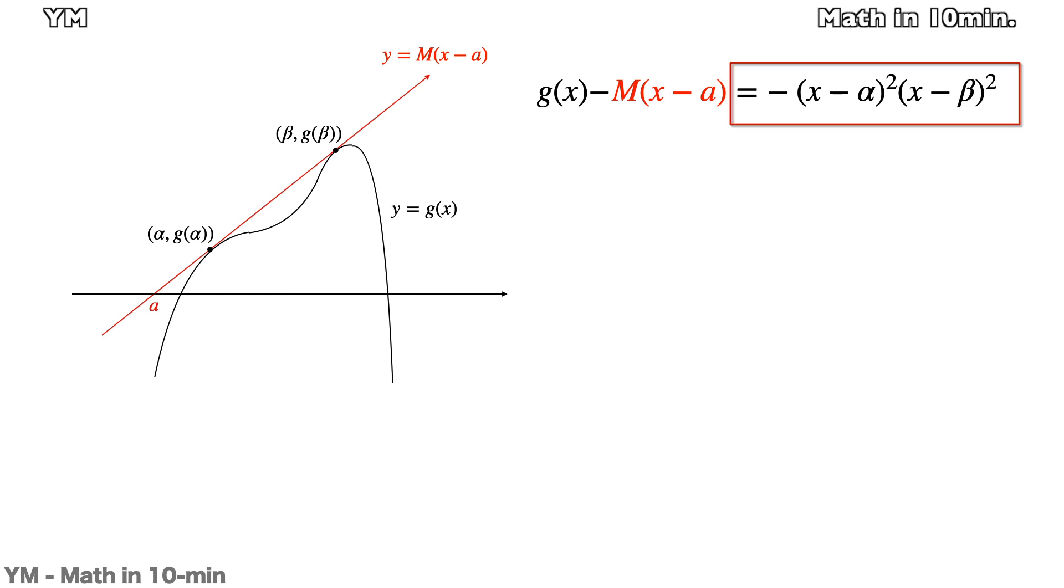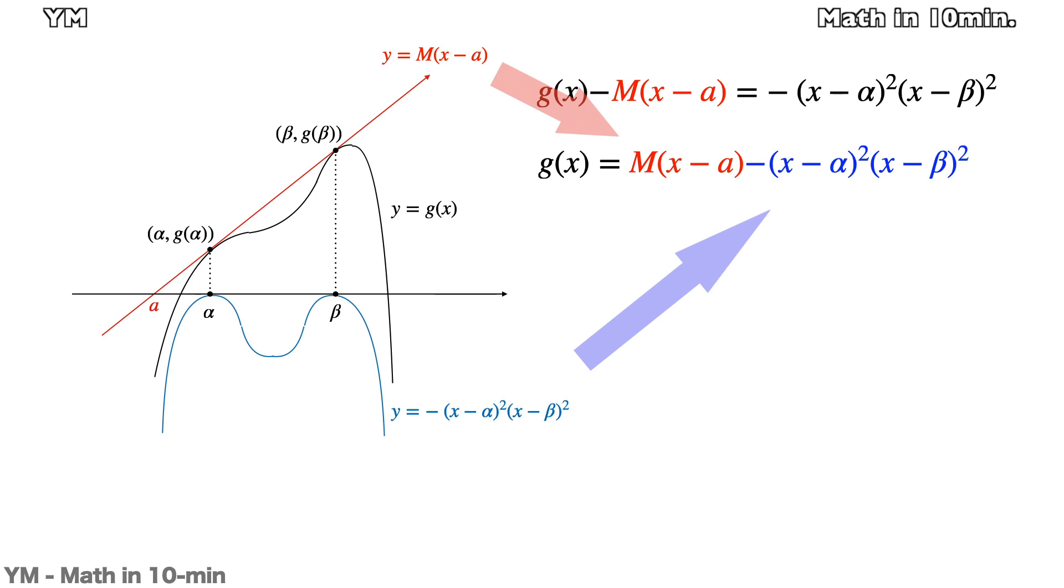Then g(x) can be simplified, and its shape can be determined depending on M, the slope of the red line. So how can you make this graph having less than two critical points? It's simple. g(x) is a function made by adding the red line to the blue graph.